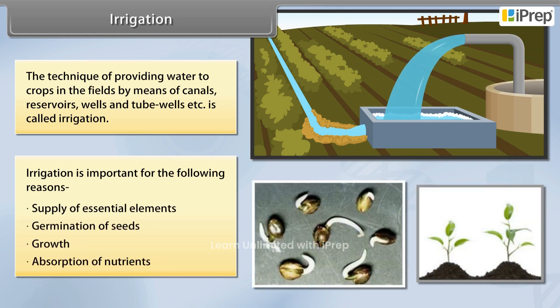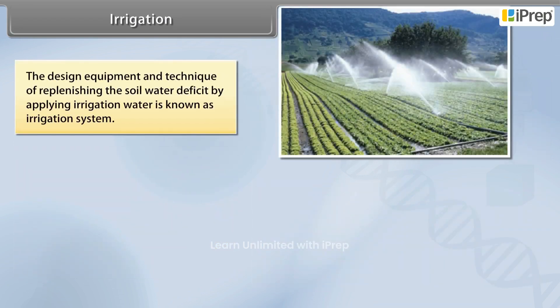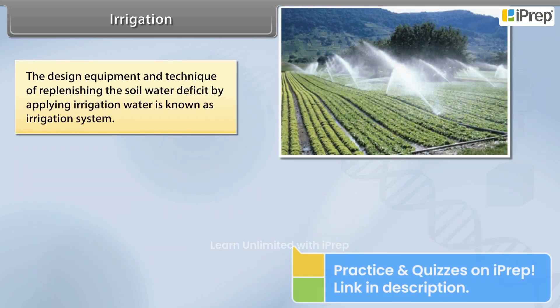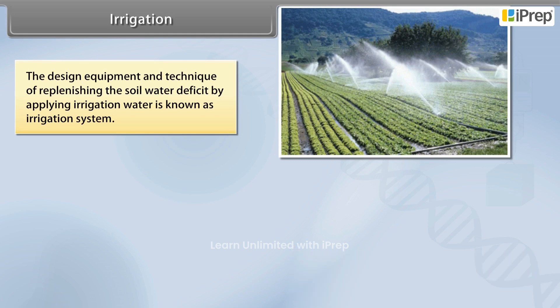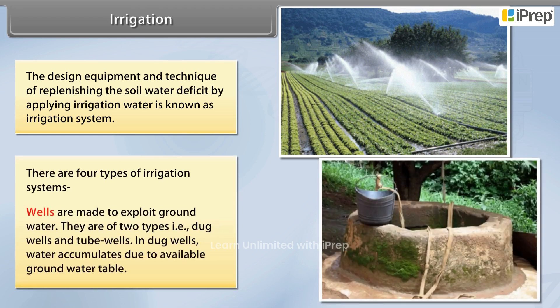The design, equipment, and technique of replenishing the soil water deficit by applying irrigation water is known as an irrigation system. There are four types of irrigation systems.